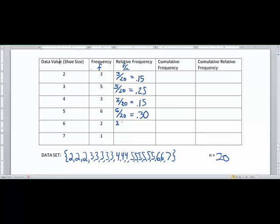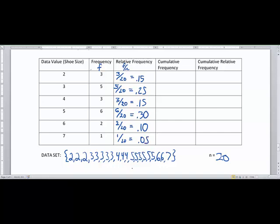Continuing on, 2 divided by 20 is 0.1, or 1 tenth, also 10%. And 1 divided by 20 is 0.05, which is 5%.